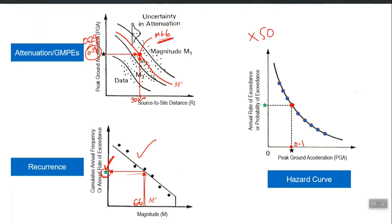Unlike DSHA, in which you consider one fixed magnitude — you use the same GMP in DSHA also — but you fix a magnitude, fix that line, and use the source-to-site distance to hit that line and select a fixed PGA. Here, you are changing PGA every time and getting a different magnitude, and from the magnitude recurrence relationship that magnitude converts into probability of exceedance, ultimately constructing the hazard curve for your site.